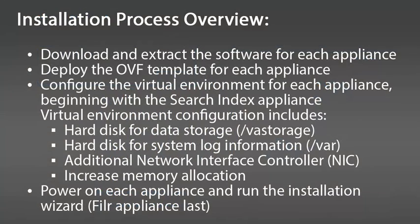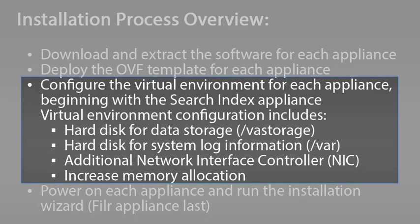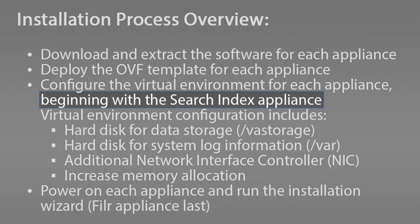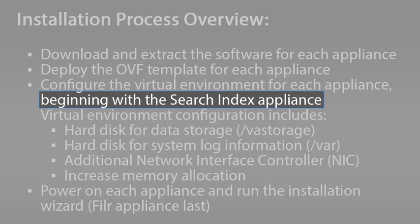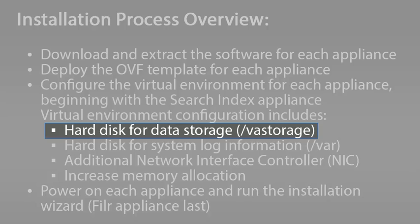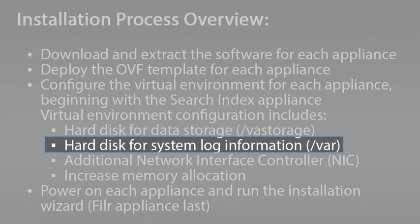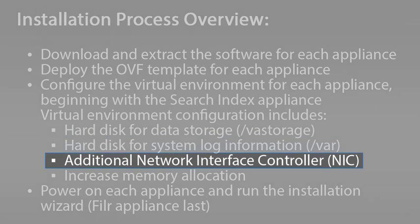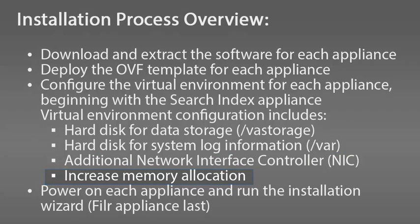After the OVF templates have been deployed, you need to configure the virtual environment for each appliance and go through the installation. As described in the Filer documentation, begin with a search index appliance. Create one VMware hard disk for storing configuration files and another for storing system log files. You can also create an additional network interface controller and increase memory allocation.